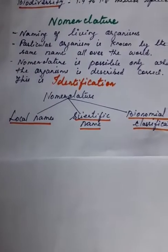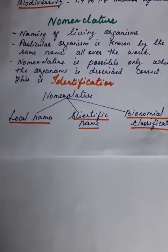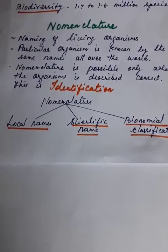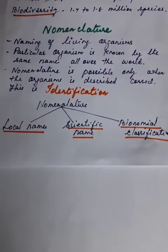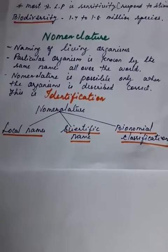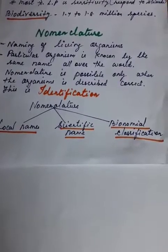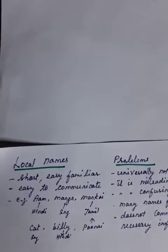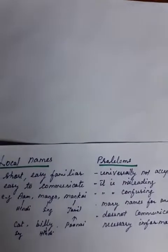How is an organism identified? Its physical features, morphological features, geographical locality, and all other details have to be described properly — this is known as identification. Nomenclature can be done by three methods: by local name, by scientific name, and the third one is binomial nomenclature.